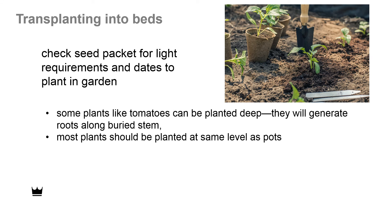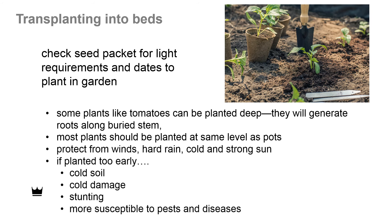When we do transplant, the soil temperature should be warm — between 55 to 60 degrees Fahrenheit. Many plants need at least six hours of sun, but be sure to check your seed packet for the sun exposure required. Some plants can be planted fairly deep, like tomatoes — they will generate roots along buried stems. Be sure to protect your plants from winds, hard rain, cold, and strong sun. If they're planted too early, the soil will be too cold, they may suffer cold damage and stunting, and overall be more susceptible to pests and diseases.